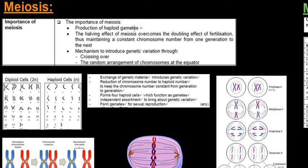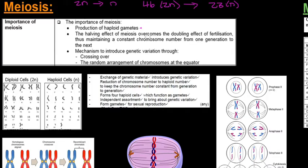The importance of meiosis is for the production of haploid gametes, so we need to go from a diploid amount to a haploid amount. Humans have 46 chromosomes, which is the diploid amount, and we need to get that to 23 chromosomes, the haploid amount in the gametes. The halving effect of meiosis overcomes the doubling effect of fertilization, thus maintaining a constant chromosome number from one generation to the next.